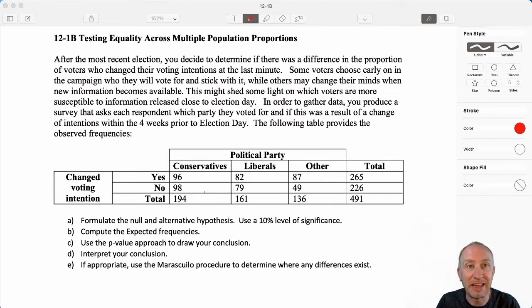In order to gather this data you produce a survey that asks each respondent which party they voted for and if this was a result of a change in their intentions within four weeks prior to the election day. So here are our observed frequencies.